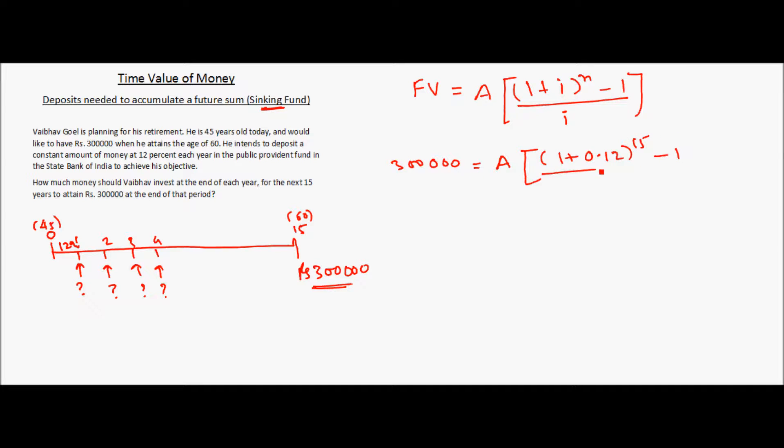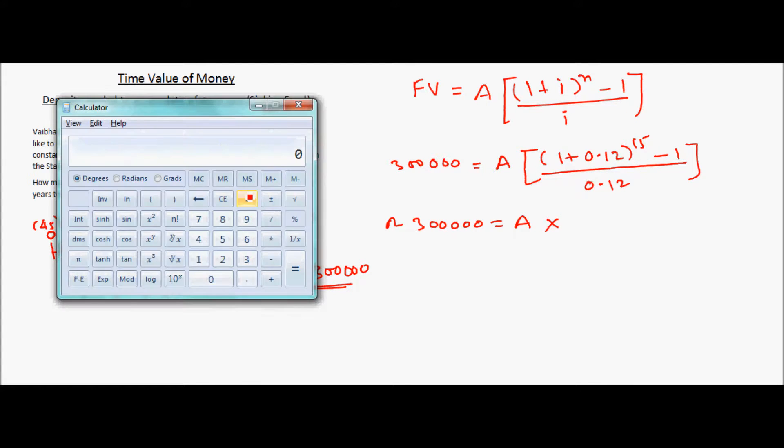We have (1 plus 0.12) to the power 15 minus 1, divided by 0.12. Or, 300,000 is equal to A times... let us calculate this value. So 1 plus 0.12 is 1.12, to the power y which is 15, minus 1, divided by 0.12.